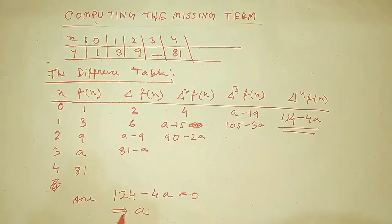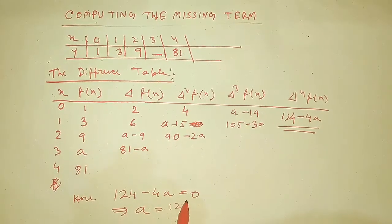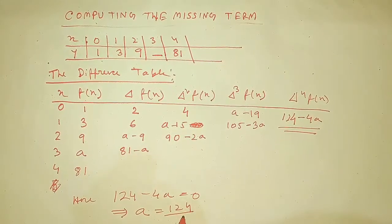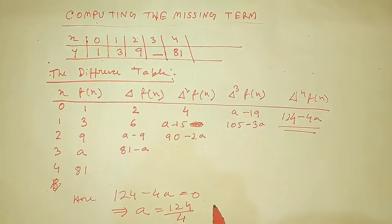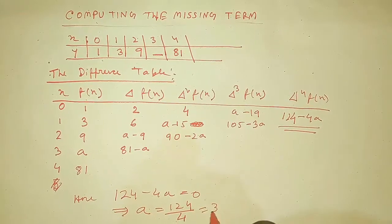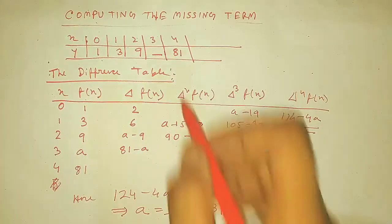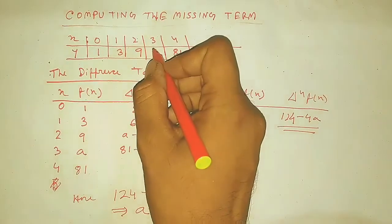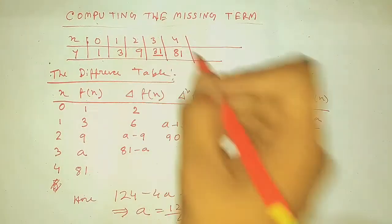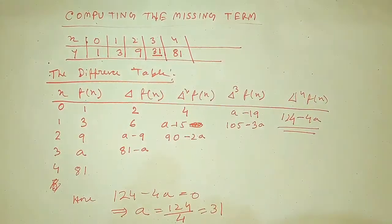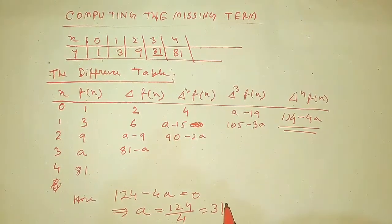After computing, the final leading difference term comes out to be something like −4a plus a constant. We set this highest-order difference equal to zero and solve the equation, giving a = 31. So 31 is the missing term. This is a very easy problem — I hope this video helps you. Please subscribe, like, comment, and share.